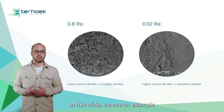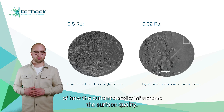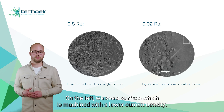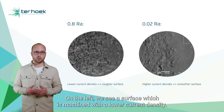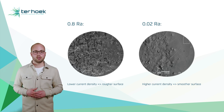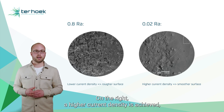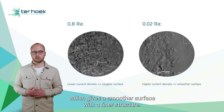In this slide we see an example of how the current density influences the surface quality. On the left we see a surface which is machined with a lower current density. On the right a higher current density is achieved which gives a smoother surface with a finer structure.